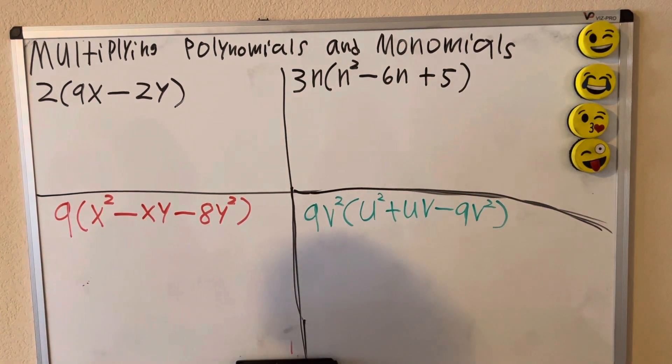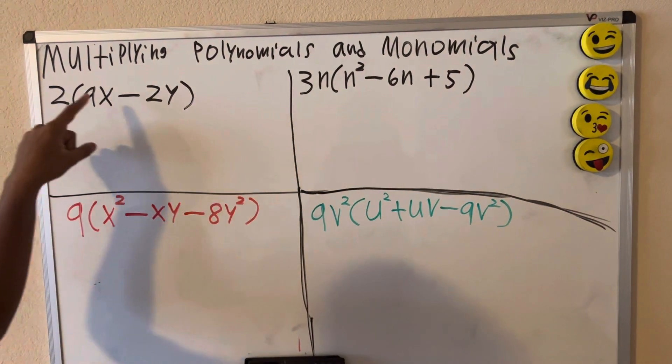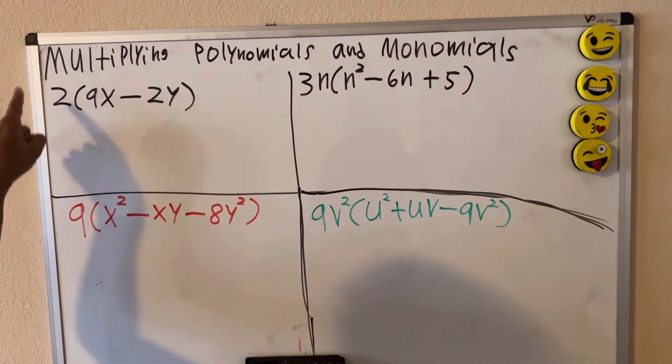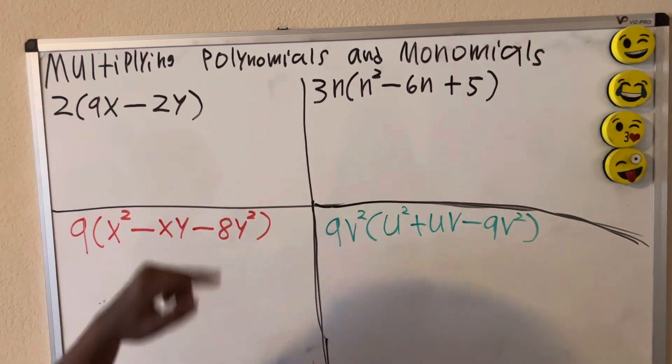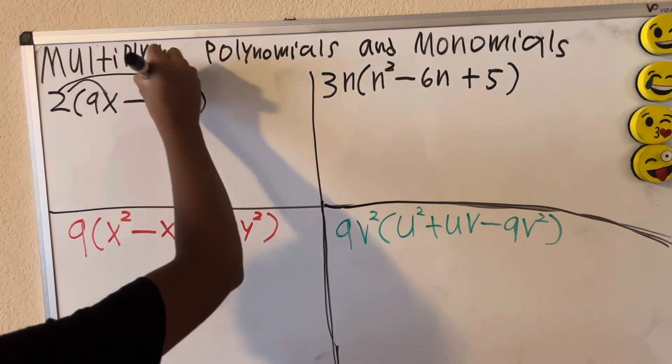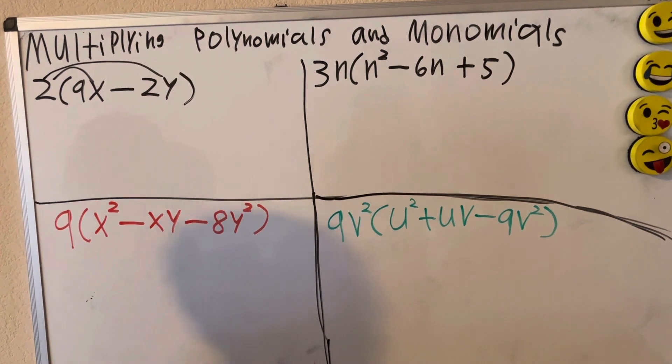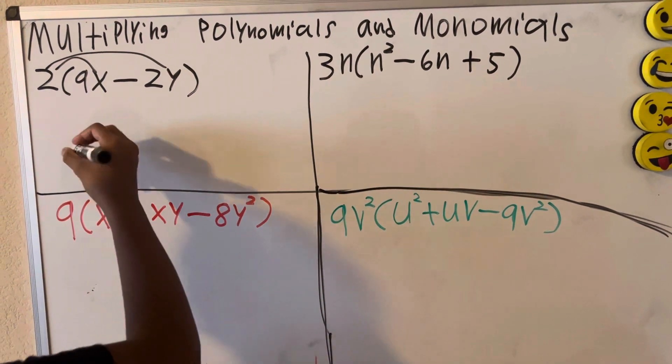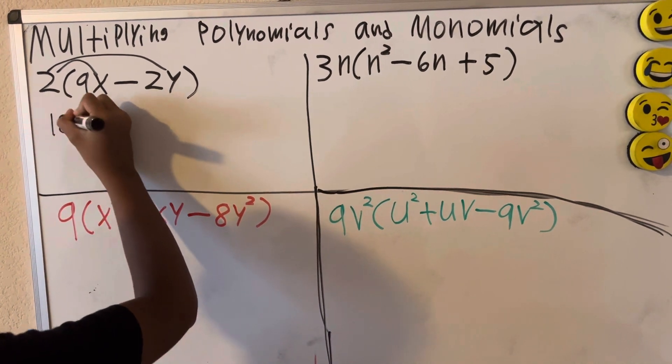What we want to do is distribute these. Our first example is 2 times 9x minus 2y. So let's distribute this 2 across all of this. 2 times 9x is 18x.